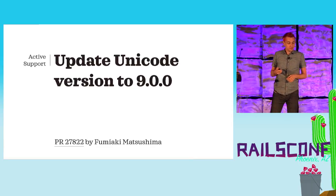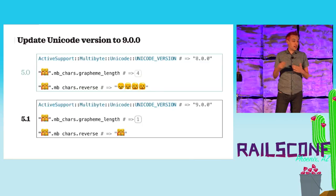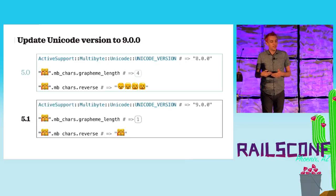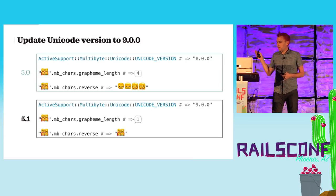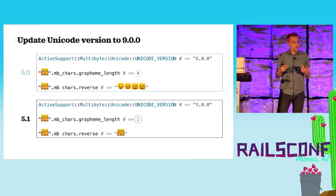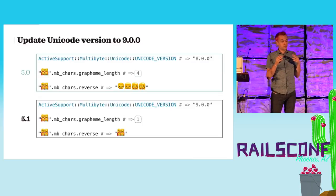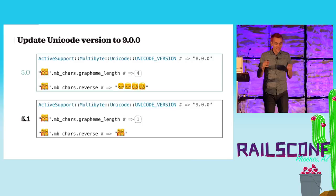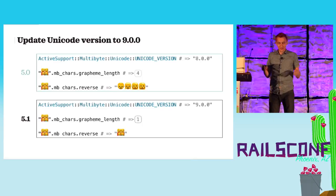There is now support for Unicode 9. For example, let's say you have a string with a single emoji — a family with two mothers, one daughter, and one son. This is one character, one emoji. But in 5.0, if you asked for the length of that string, you would get four. And if you reversed the string, the family would be split into four characters, which is probably not what you wanted. In 5.1 there is full support for Unicode 9 and families are not going to be separated anymore.